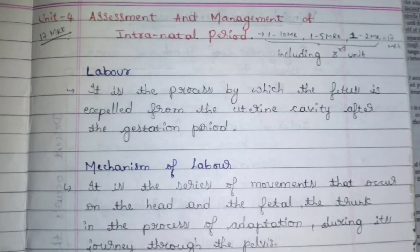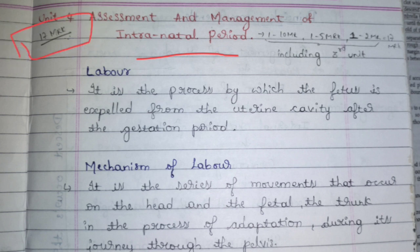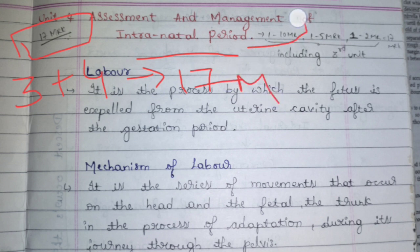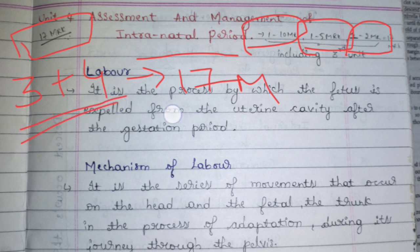Hello guys, welcome back to the channel. Today we are going to see Unit 4, that is Assessment and Management of Intranatal Period. This unit consists of 17 marks — but Units 3 and 4 are combined together for 17 marks: one from 10 marks, one from 5 marks, and one from 2 marks. If you study chapters 3 and 4, you are perfect with 17 marks.